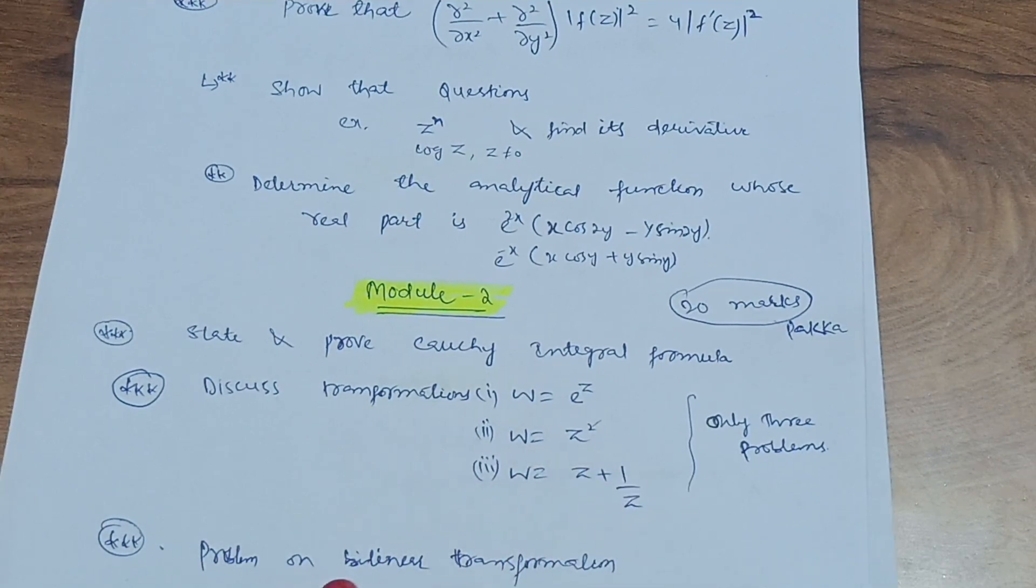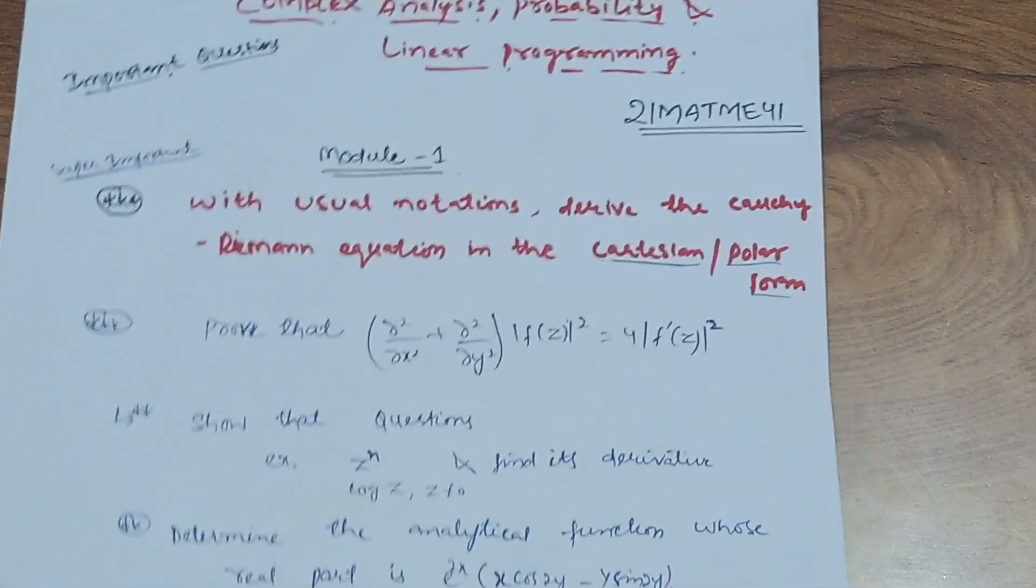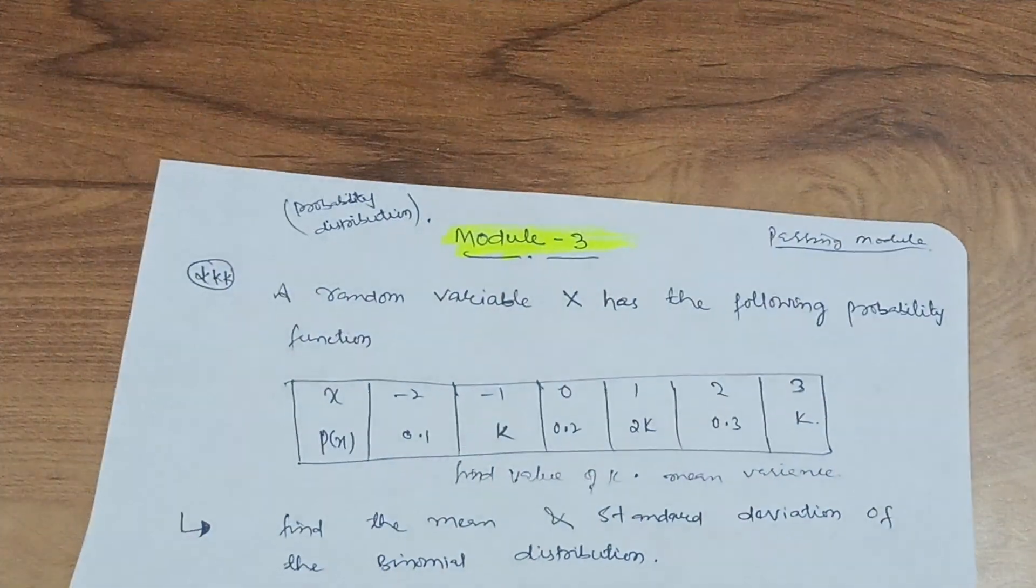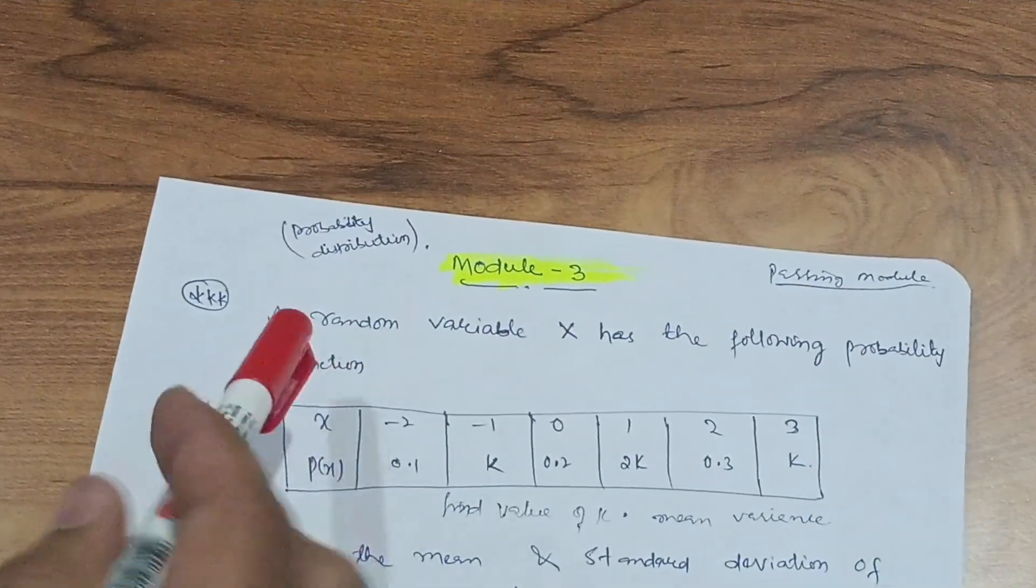You have to try this particular derivation which is a definite question, a definite derivation you can say. It carries seven marks and also practice these transformations which I discussed here and also problems on bilinear transformation.